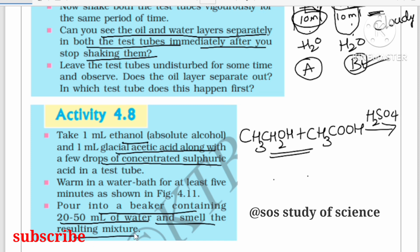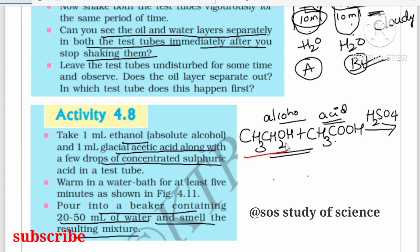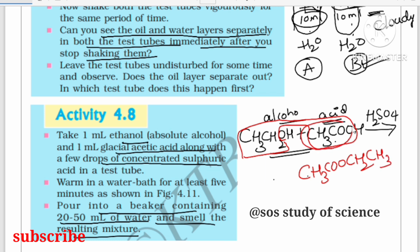This is the reaction between an alcohol and an acid. When ethanol reacts with acetic acid in the presence of concentrated sulfuric acid, the CH₃COO group combines with the CH₂CH₃ group to form CH₃COOC₂H₅ (ethyl acetate), which is an ester. The leftover OH and H combine to form water.